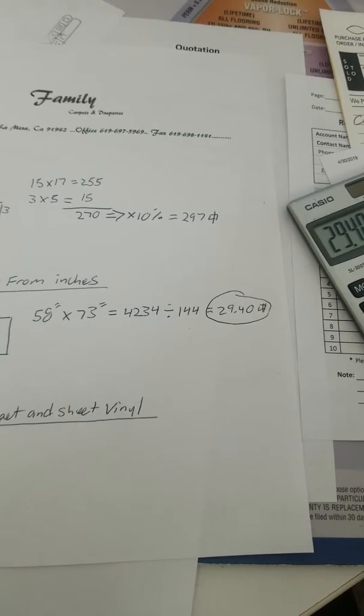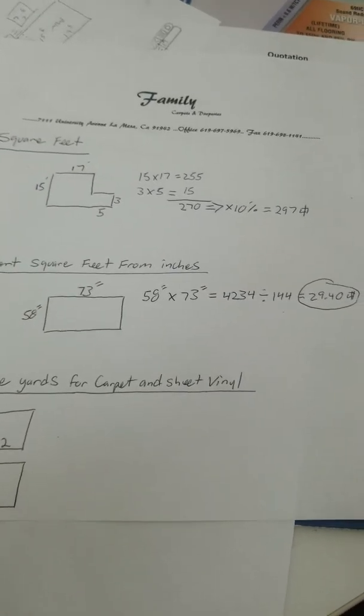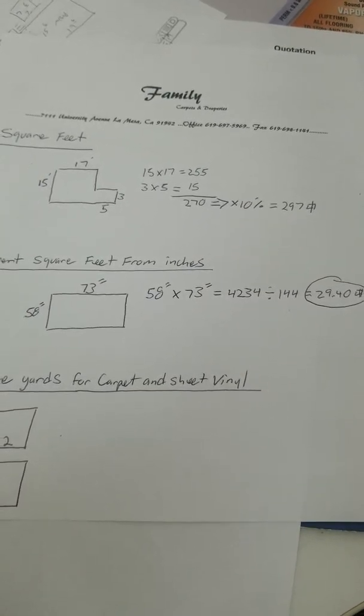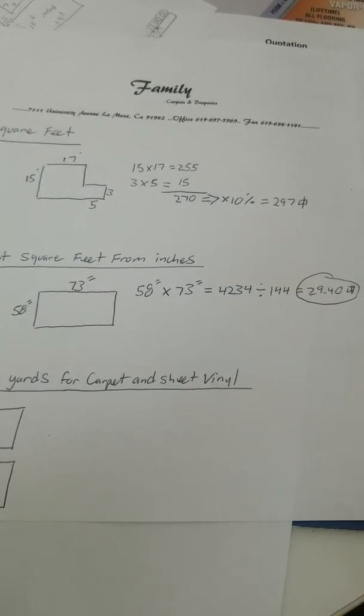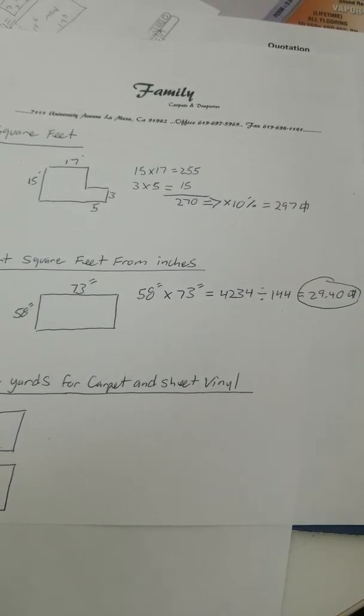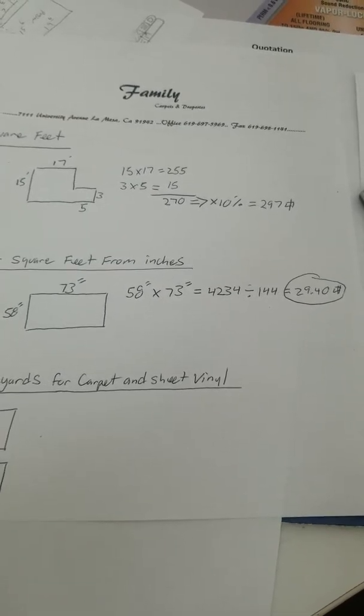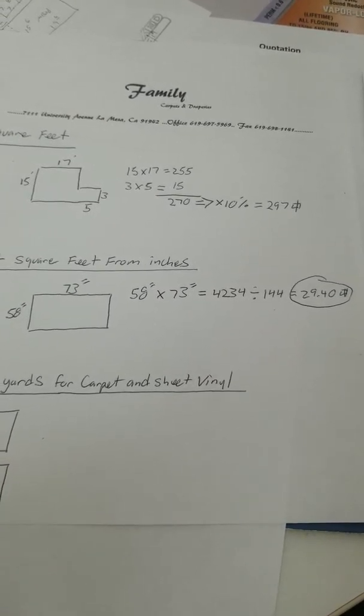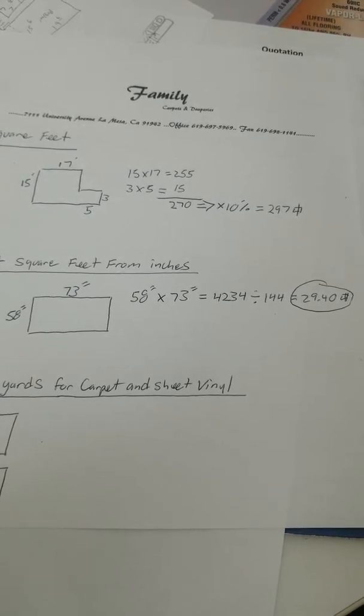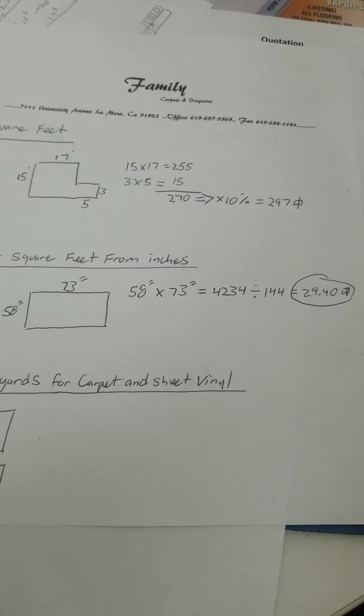And that's how you calculate what a shutter is going to be. So, when someone comes in with multiple dimensions and you say, I can convert that now. 58 inches, 73, 144. That equals 29.40 square feet and then you can times that by whatever the cost factor that we have depending on the unit.